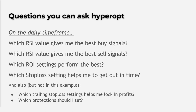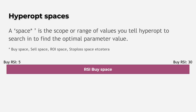Before we translate these questions into a hyperopt file, we first must understand some hyperopt concepts. The first concept is the hyperopt space, which I also call the search scope — hyperopt will search for the optimal parameter value within the scope you set in the strategy file. Each question has its own space. For the ROI space and stop loss space, FreqTrade uses its own configured search space, which you can find on the website. You only have to worry about the indicator spaces.